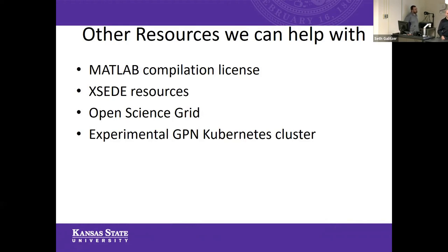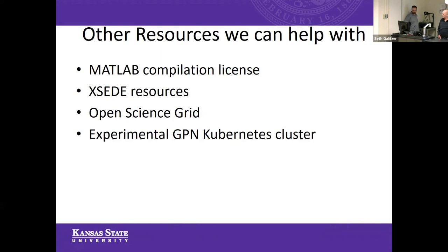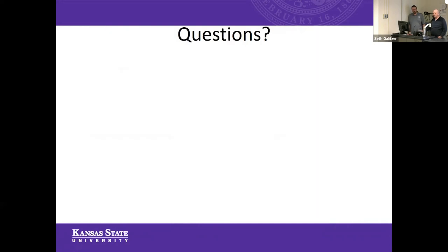New just this week: GPN, the Great Plains Network, is a consortium of states in this region — Kansas, Oklahoma, Arkansas, Missouri, Minnesota, South Dakota, North Dakota — working together on a bunch of projects. We now have a Kubernetes cluster distributed there too. So if you need Docker and containerized workloads, we have ways you can go there. It's highly experimental right now, but if you have something that fits that space, let us know — we'd like to help you out with that.